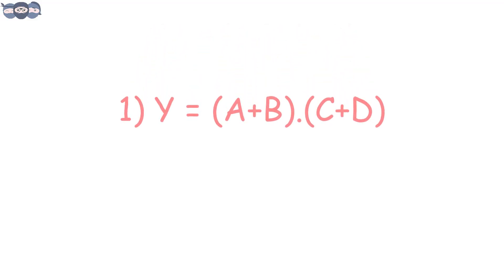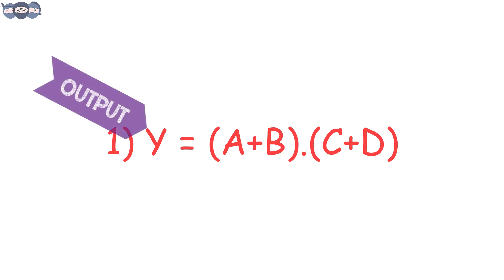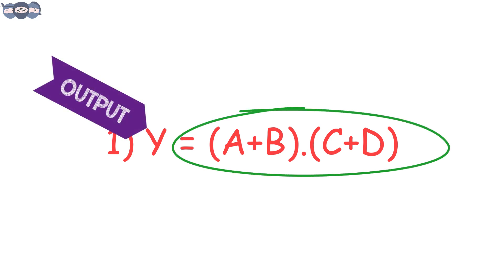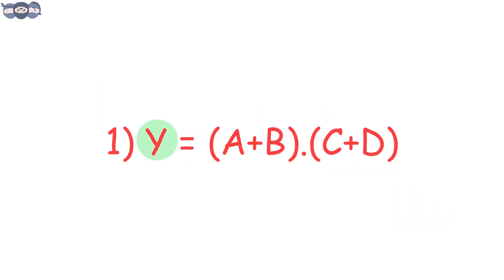The first expression is y = (a OR b) AND (c OR d). Looking at the expression, we can understand that the output is y and a, b, c, and d are the inputs. The output y is ON when either a or b or both, AND either c or d or both, are ON.